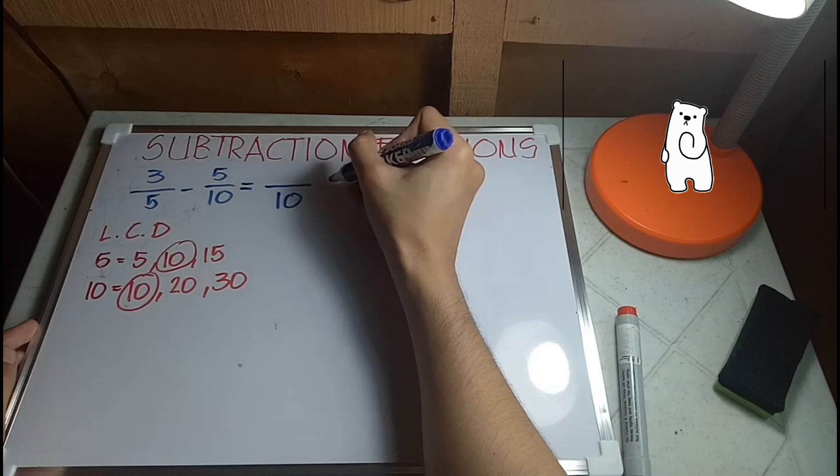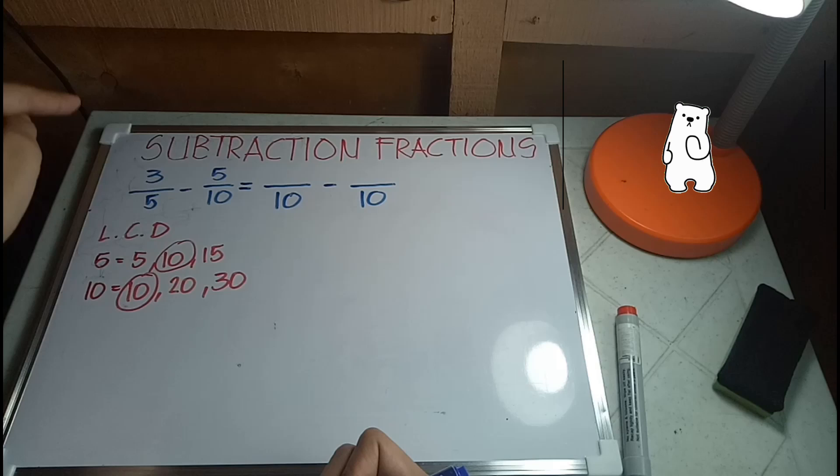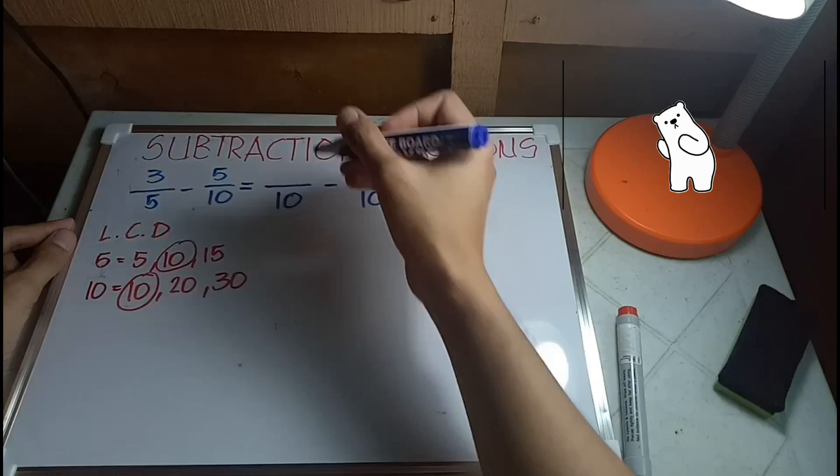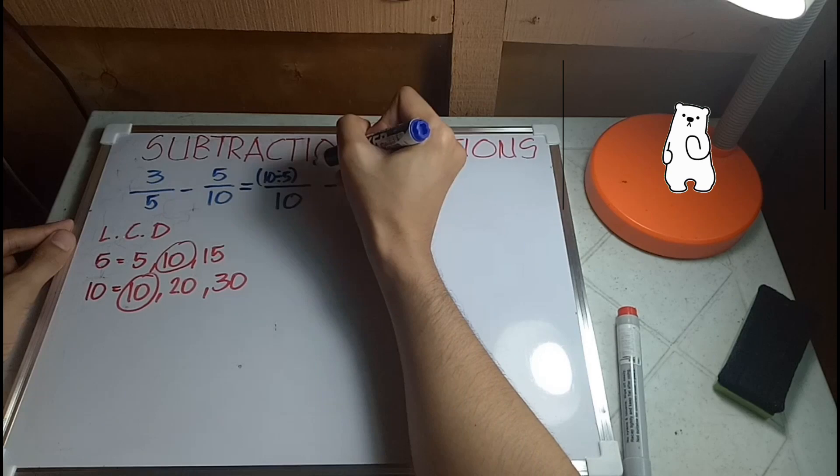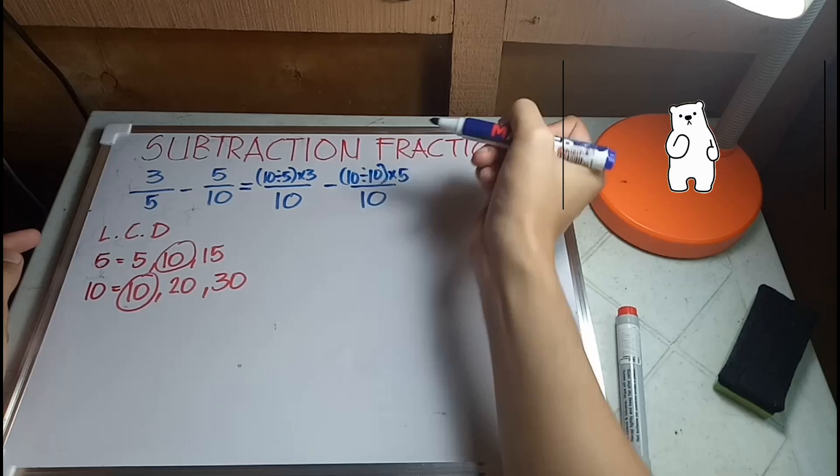I won't erase this so we don't get confused. What we will do is this new denominator of these fractions will be divided by the old denominator and multiplied by the numerator. So 10 divided by 5, I'll put it in parenthesis, times 3, and we have 10 divided by 10 times 5.